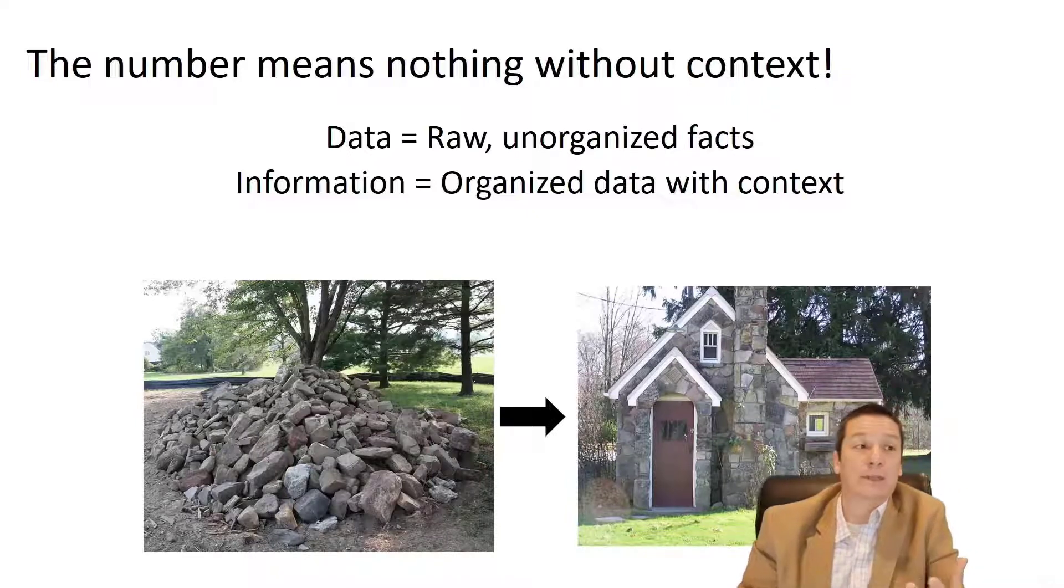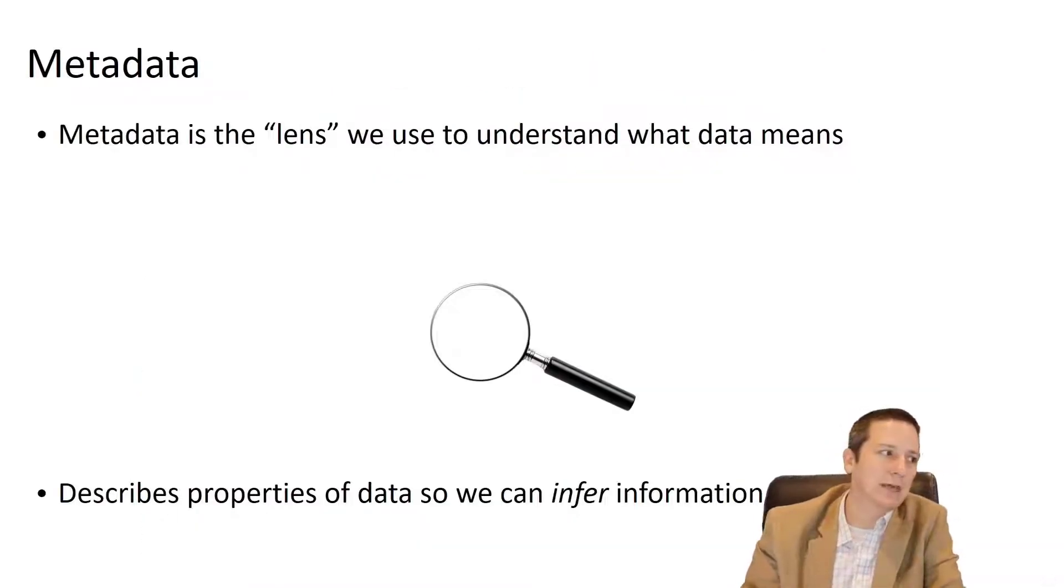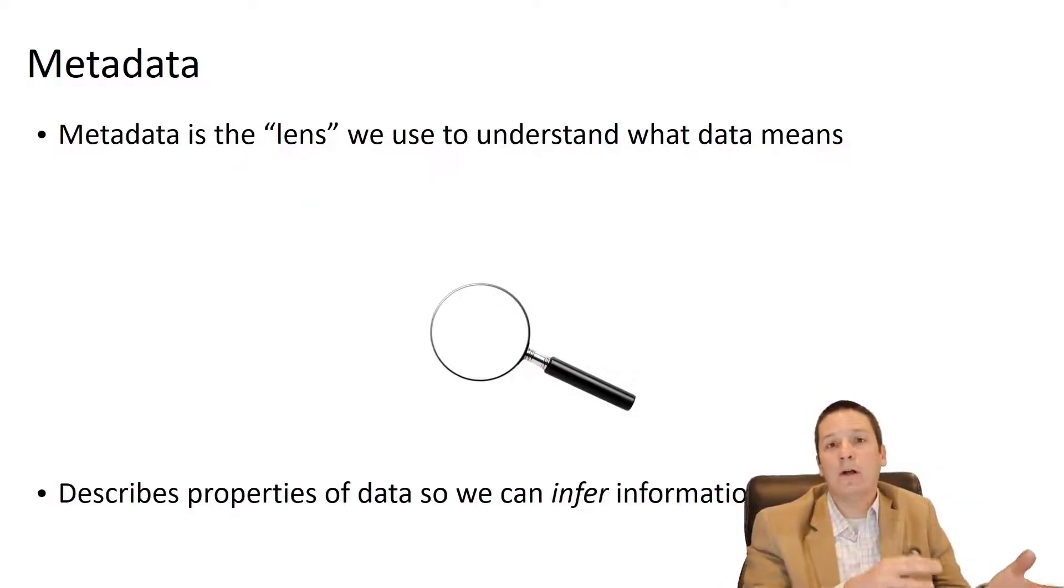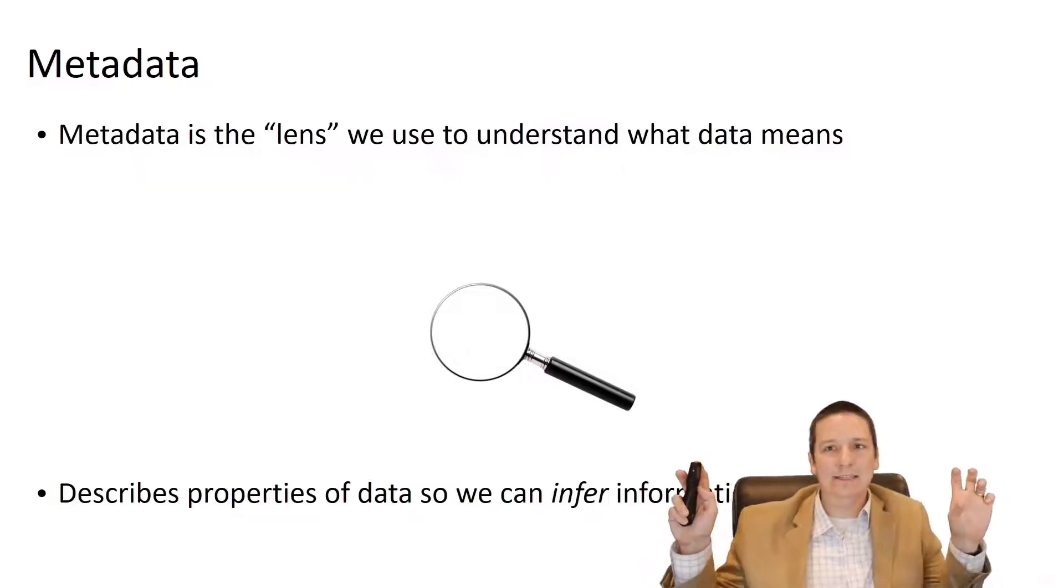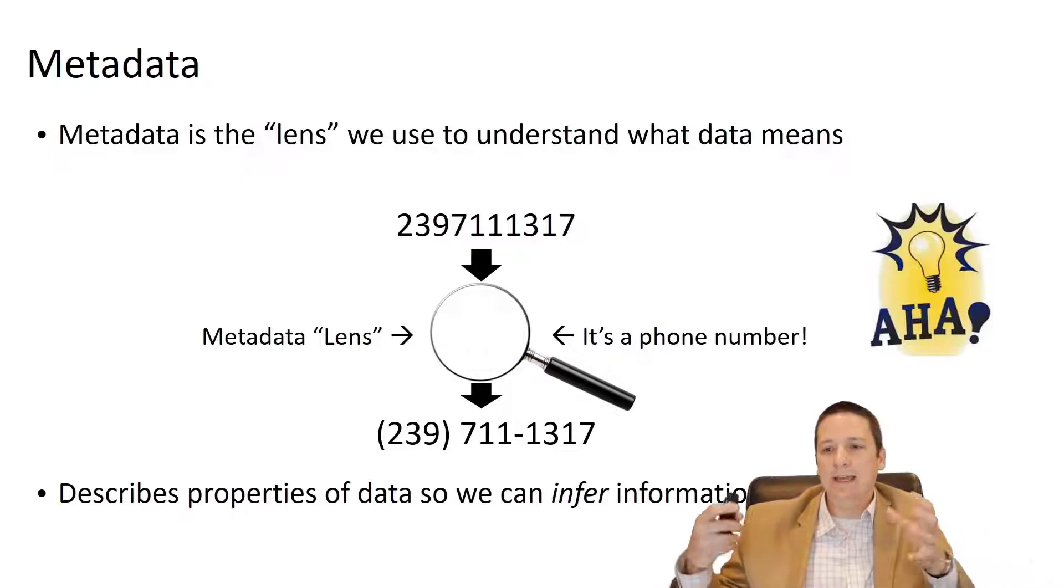Information is what is valuable for making business decisions or for AI algorithms or for understanding our customers and things like that. The way we transform this raw data into useful information is through metadata. It's the lens that we use to understand what data means, and it describes the properties of data so we can infer information. Metadata is data that describes our data.